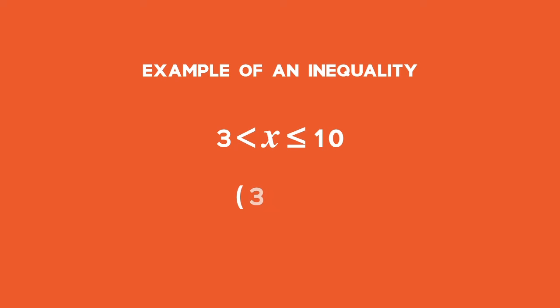this is written as a round bracket 3, semicolon 10, and closed with square brackets to include the value 10.